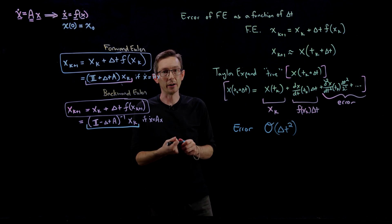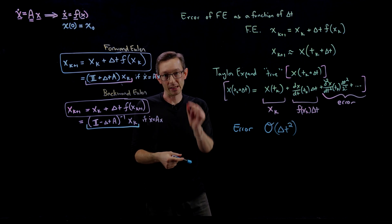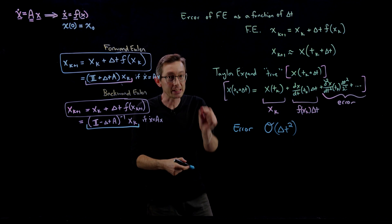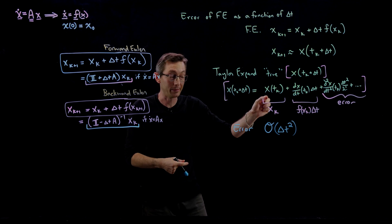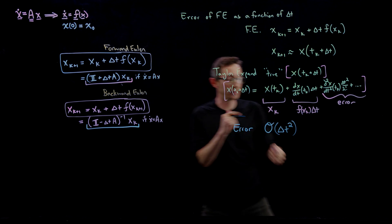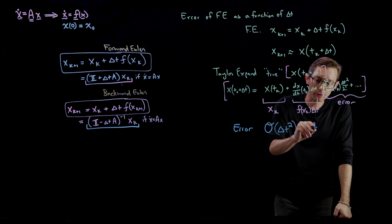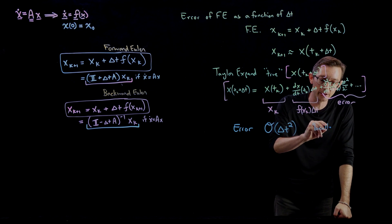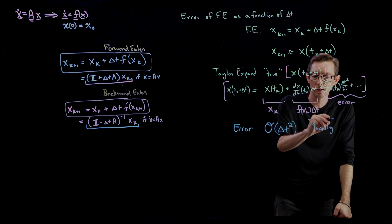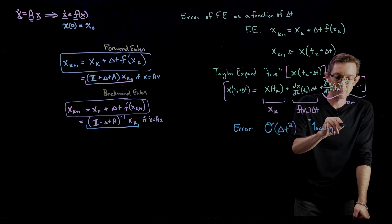All those higher-order terms that forward Euler doesn't capture give us the error in our approximation. This tells us the scheme is second-order accurate in delta t per step — the error scales as delta t squared. So the error of forward Euler is order delta t squared. This is the local error — the error per single time step.